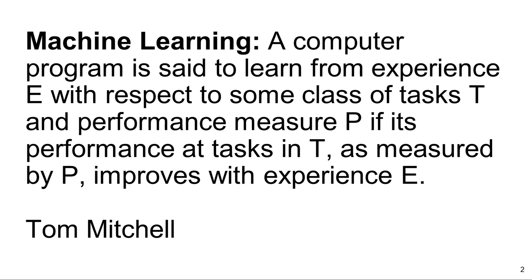Performance: how do we define success? For image classification, we can say whether the images are classified correctly. If we give an image of a human and a computer says it's a human, that is correct. If the computer says that is a house, it is incorrect. For autonomous vehicles, we can define how many miles the vehicle travels without any accident.